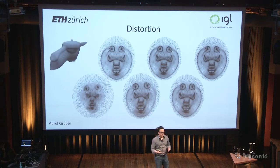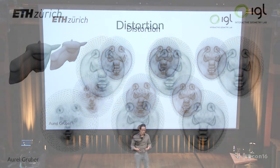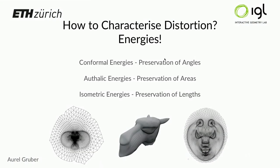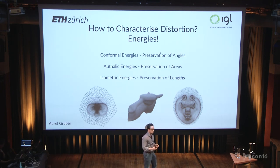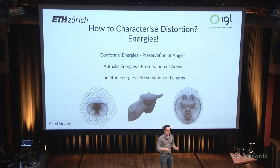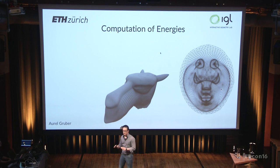But how can we formally reason about distortion? Here you can see several different maps, and intuitively it's clear that the one on the bottom left is fairly bad while the one on the top right is fairly good. We can formally capture this with energies — a number assigned to a UV map that tells us how good it is in terms of distortion. There are conformal energies concerned with angle distortion, isochoric energies concerned with area preservation, and isometric energies that care about edge length. This last energy is by far the most important for UV unwrapping and texture painting.